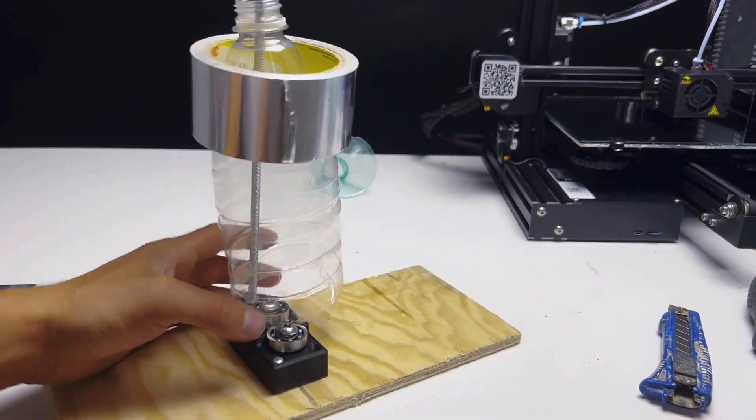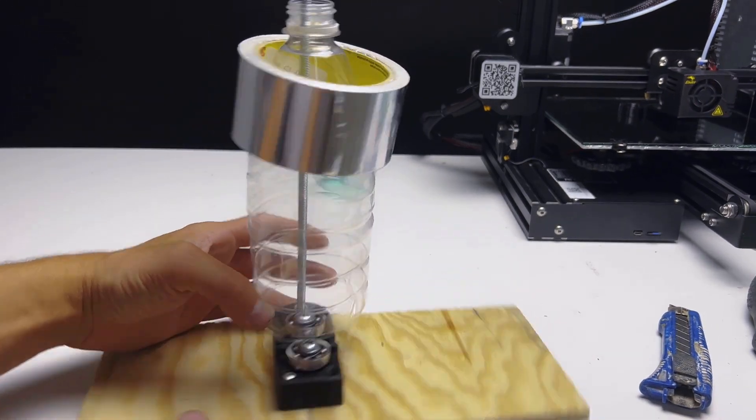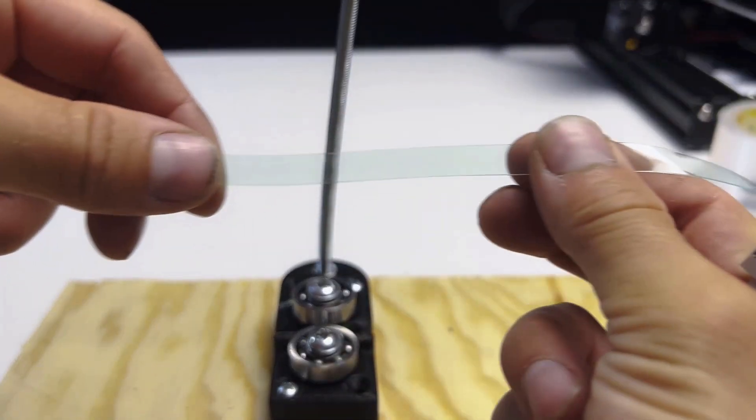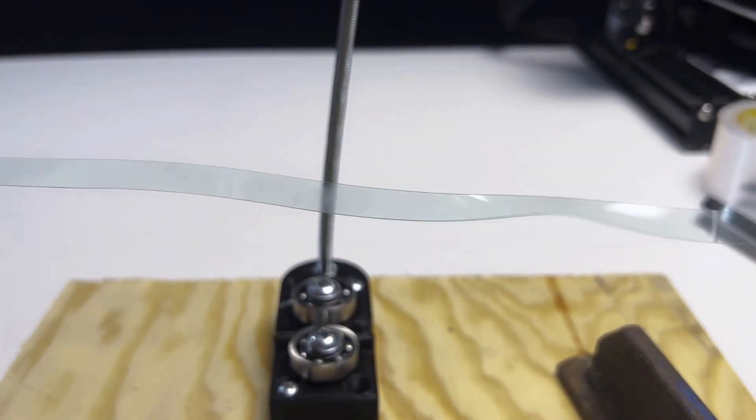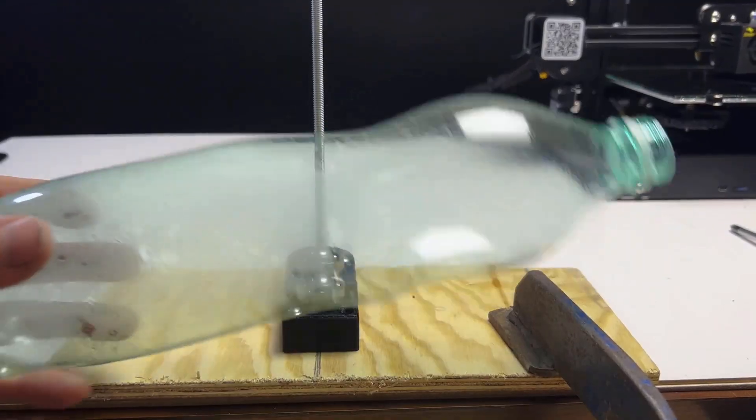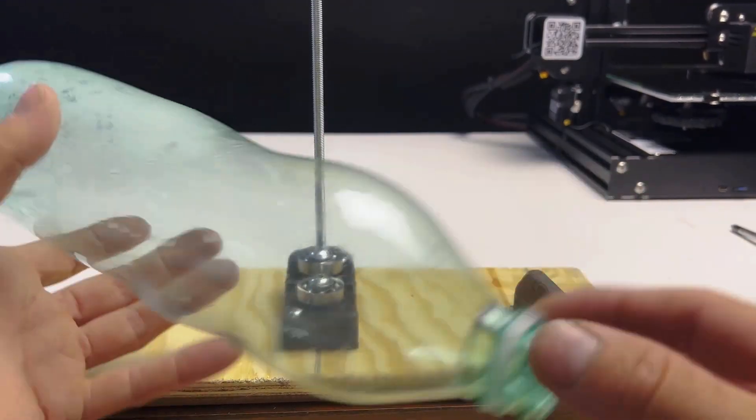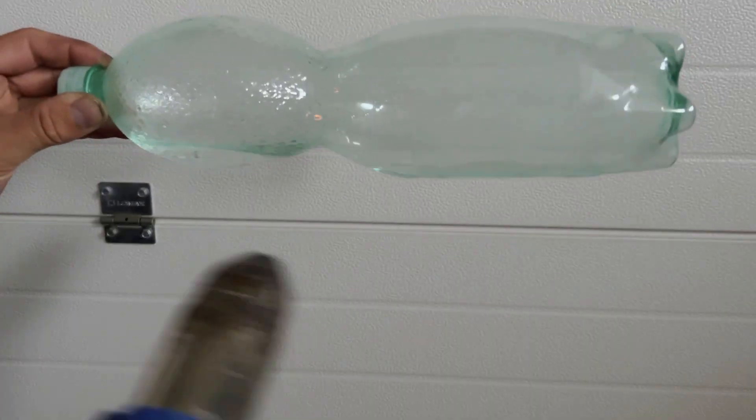The problem also occurs due to a poorly cut bottle that is not straight; therefore, the problem accumulates. It's crucial for the bottle to be smoothed out without any creases.